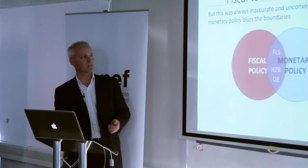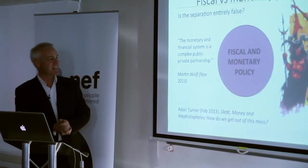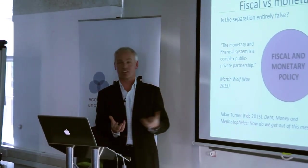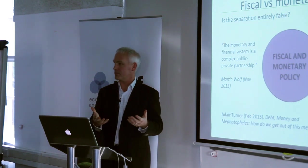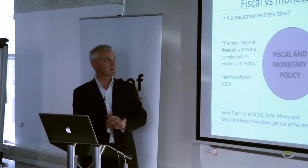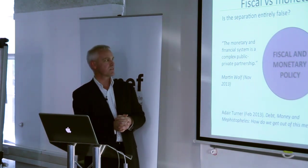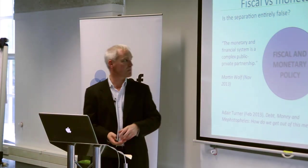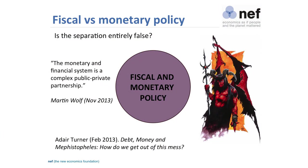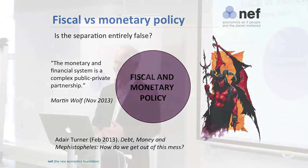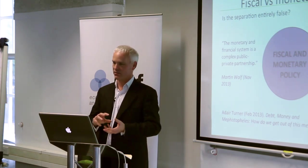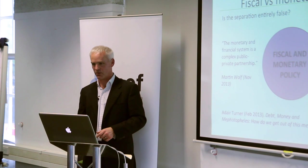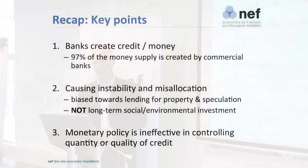Adair Turner said that if governments create money and no longer need to rely on financial markets, then their fiscal policy and monetary policy look to be pretty well the same thing. And Martin Wolf said that the monetary and financial system is a complex private-public partnership — a nice way of saying that money creation is already very much guaranteed by the government, by all of us. So should we not have more control over how it is used and what it does? That's the end — the three points to remember — and thank you very much.